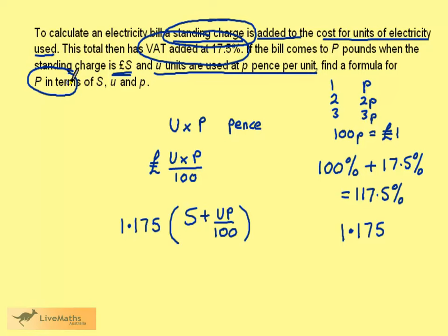Note we have two P's here. The capital P is the value of the final bill, and the small p is the pence per unit. Uppercase and lowercase letters represent different algebraic quantities, but we need to be careful to make sure this P is larger and clearly different in the formula.